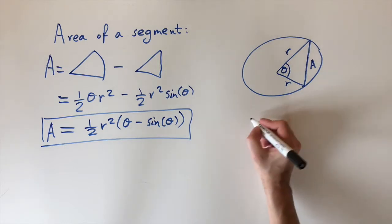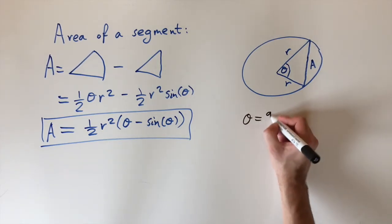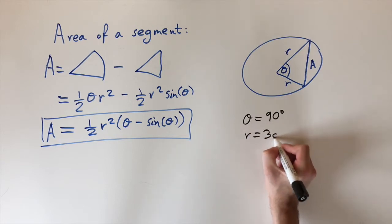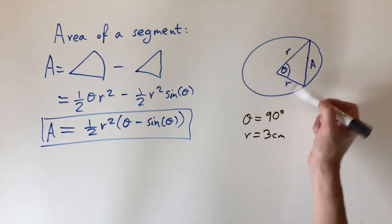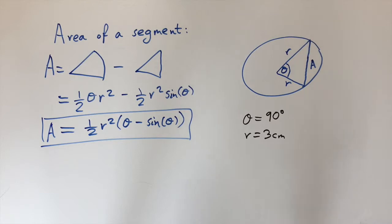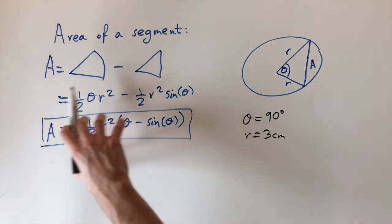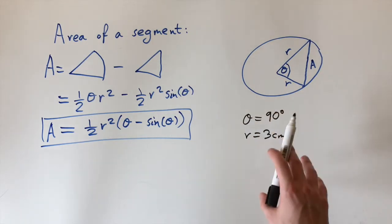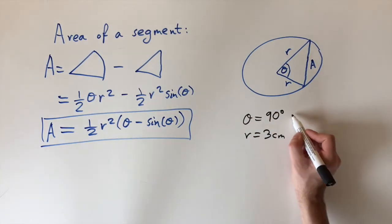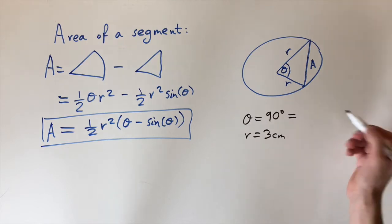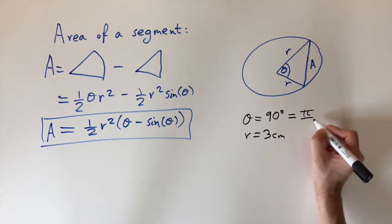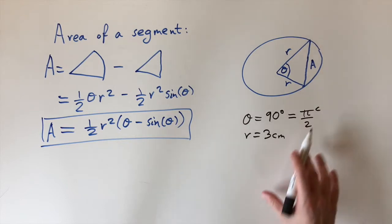Let's start with a simple example: the angle is 90 degrees and the radius is 3 centimeters. We need to be careful — the formula only works in radians. So first we convert 90 degrees: it's a quarter of a full circle, so it's 2π divided by 4, which equals π/2 radians.